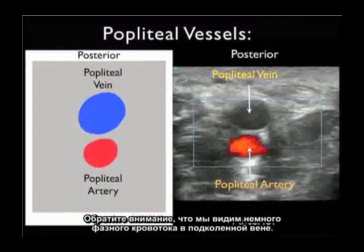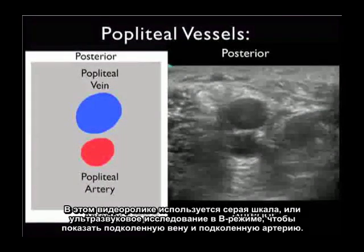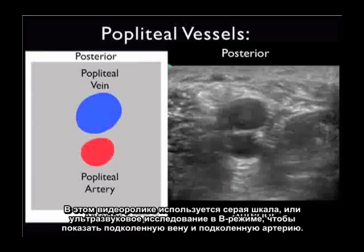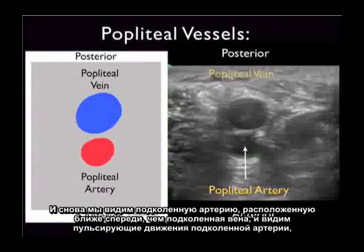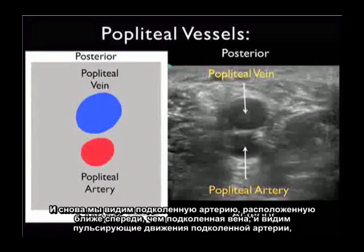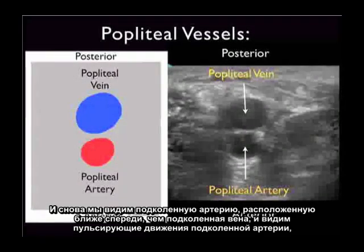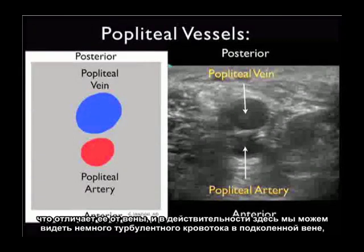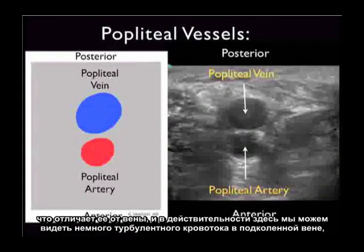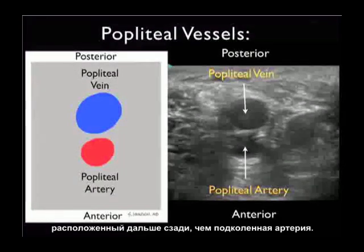In this B-mode or grayscale sonography video clip, we again see the popliteal artery located more anterior than the popliteal vein. We can see the pulsatile movements of the popliteal artery differentiating it from the vein, along with a little turbulent flow of blood within the popliteal vein, located more posteriorly than the popliteal artery.